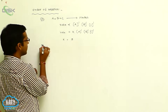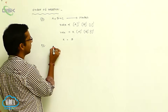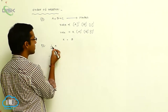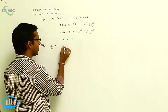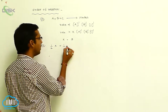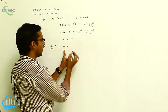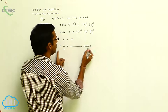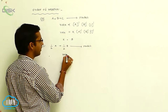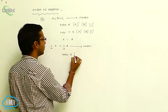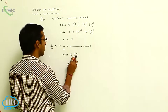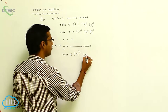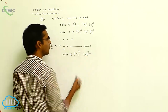Or, discussing another example: here A has half mole, and it reacts with B, which also has half mole, to give product. In this process, the rate is directly proportional to A raised to half and B raised to half.